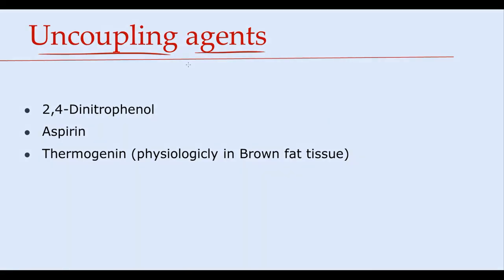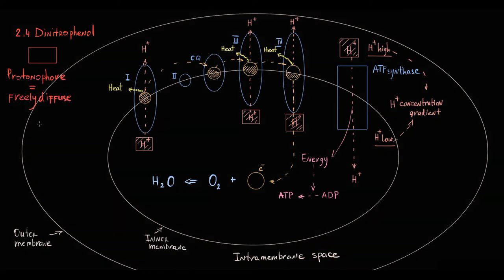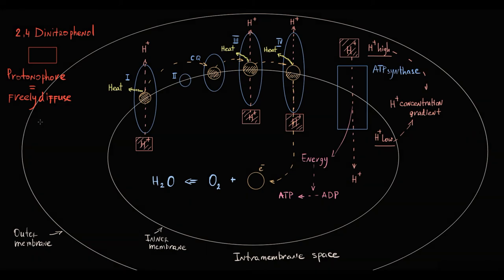And the third group is uncoupling agents. The first one is dinitrophenol, that is used for weight loss. Dinitrophenol is a protonophore. Protonophore is a substance that can freely diffuse across the lipid bilayer, including inner mitochondrial membrane. Basically it can squeeze through it. But what makes dinitrophenol so special is its love for hydrogen protons. This substance picks up protons in intramembrane space and along with hydrogen protons it diffuses through inner mitochondrial membrane, thereby delivering hydrogen protons to mitochondrial matrix.